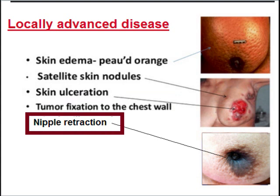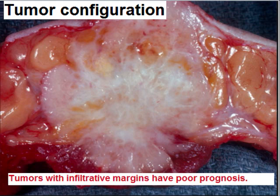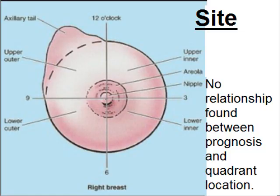Other signs of locally advanced disease include skin ulceration, tumor fixation to the chest wall, and nipple retraction, meaning the tumor has invaded the skin. Inflammatory carcinoma of the breast presents with redness and swelling due to lymphatic infiltration. Tumors with infiltrative margins have poor prognosis. No relationship has been found between prognosis and quadrant location.